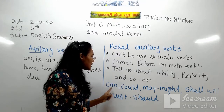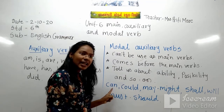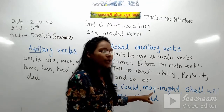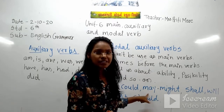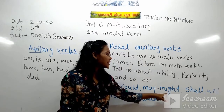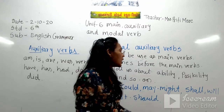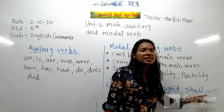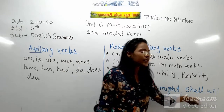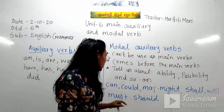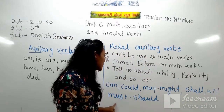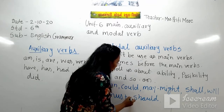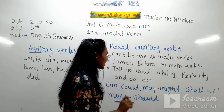Can is the present form and its past tense is could. May is the present form and its past form is might. Shall and will are used in the future tense to show future action. And then there are must and should.